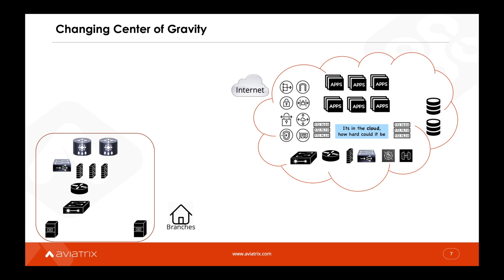It turns out, even something as fundamental to networking as a route table is handled differently by each CSP. Moreover, in the cloud, we see new constructs such as identity and access management — IAM — accounts, subscriptions, and tenants. Each CSP has its own unique flavor of IAM, and each CSP has its own unique flavor of managed services to provide networking and security.